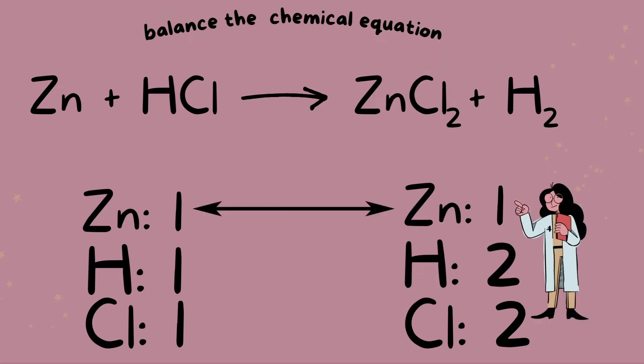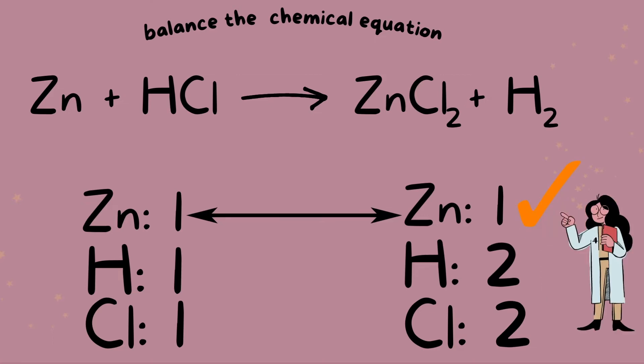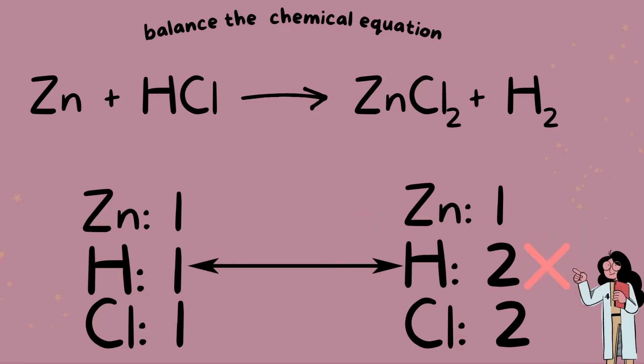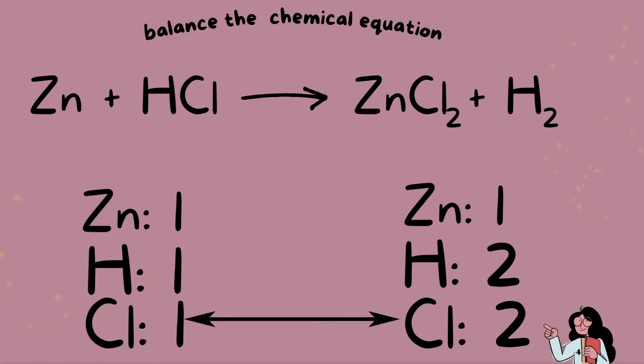So our zinc looks like it has a one-to-one ratio and it's balanced, so that's great. Hydrogen, however, is not balanced and chlorine is not balanced.